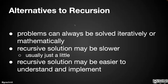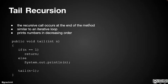I want to define two terms and then we're going to run some code together so you can compare and contrast them. The first is called tail recursion. Not every recursive algorithm falls into one of these two categories, but many do, so they have special names. Tail recursion is when the recursive call — in this case our recursive method is called tail — occurs at the end of the method. This approach is similar to an iterative loop style, and we do the problem-solving part before making the recursive call, so we print the value of n first.